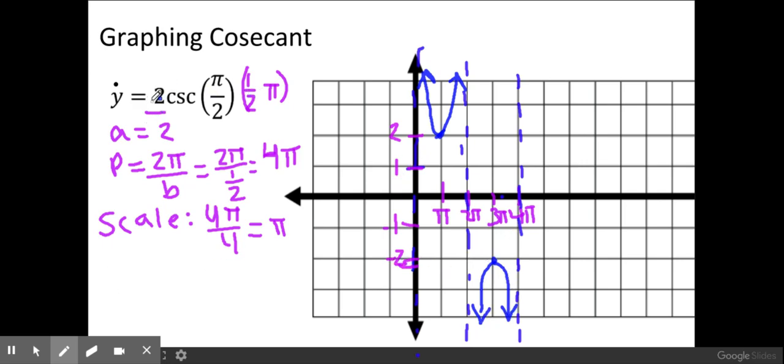If it was a negative a, the pattern would flip. So you would instead have a graph here and here. But ours is not negative.